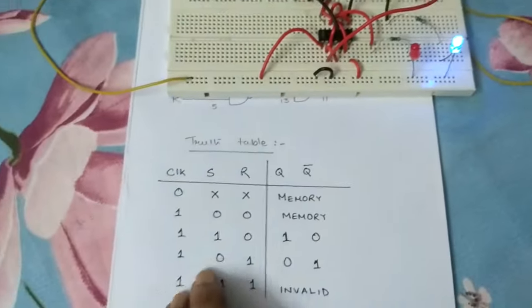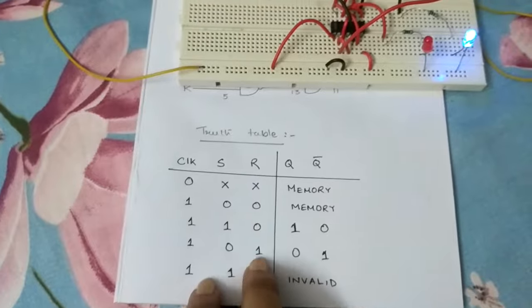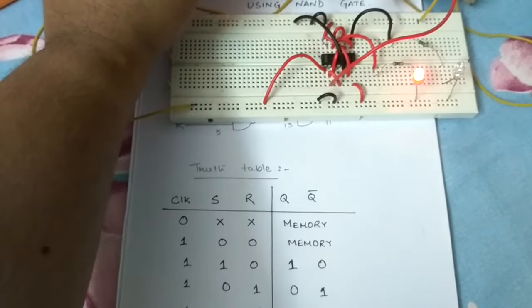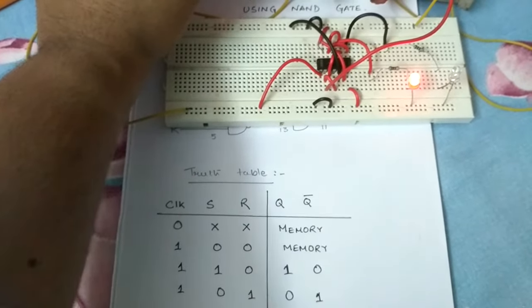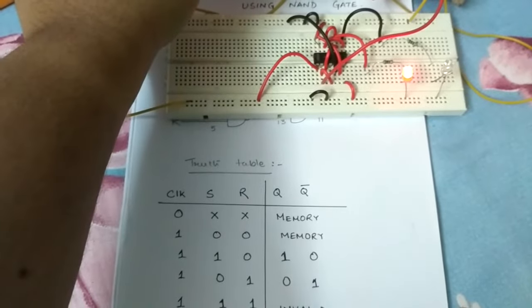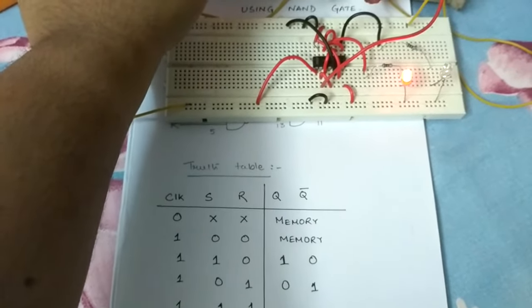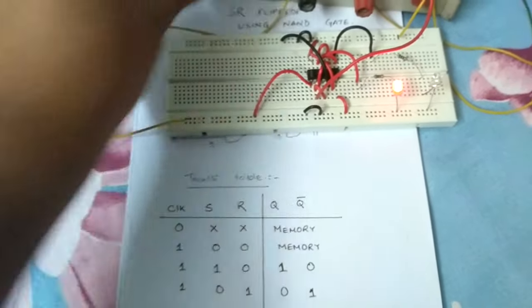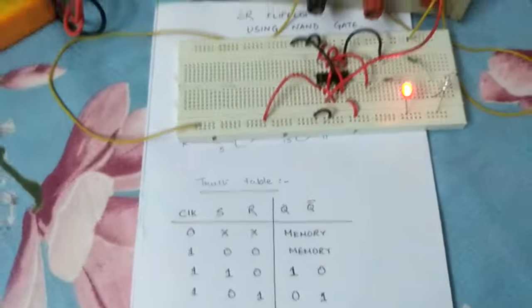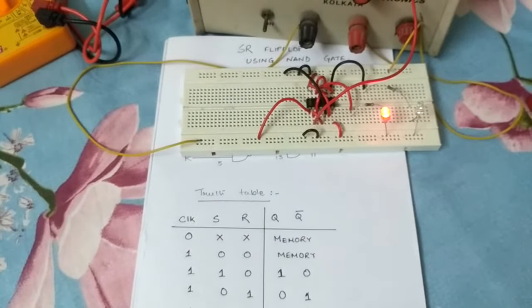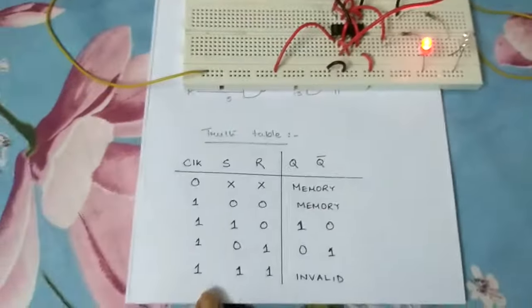I made S zero. Q bar is now glowing and Q is off. I hope it's clear.